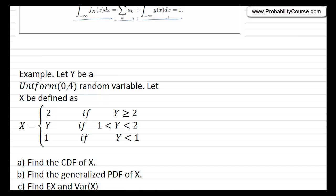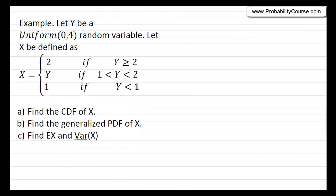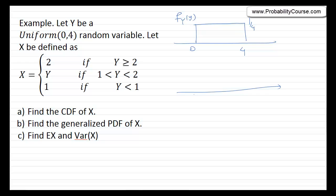Let's look at an example to practice all of that. Let Y be a Uniform(0, 4) random variable, so its PDF is 1/4 from 0 to 4, and its CDF goes from 0 to 1. We define the random variable X as follows: if Y is greater than or equal to 2, then X equals 2; if Y is less than 1, then X equals 1; and if Y is between 1 and 2, then X equals Y. The question is: find the CDF of X, the PDF of X, and find the expected value and variance of X using the PDF.